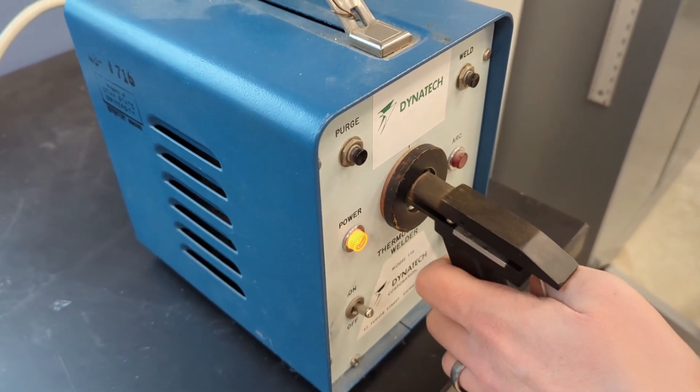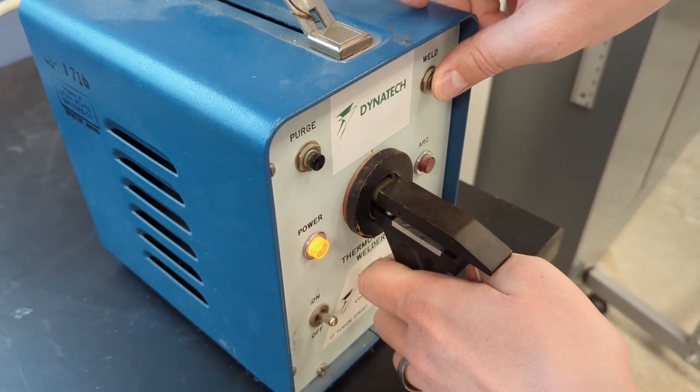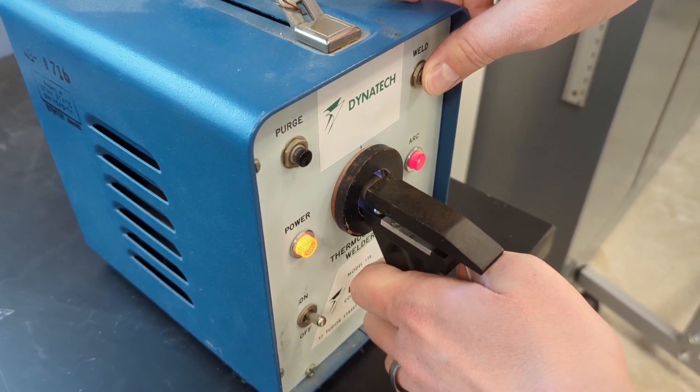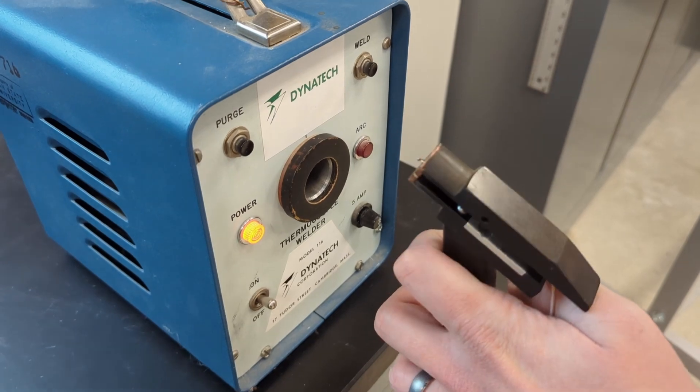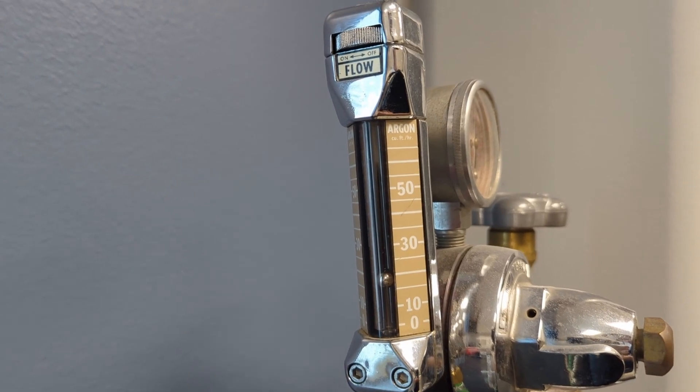Place the wire holder with twisted thermocouple wire into the welder. Press and hold the weld button until the arc button lights up and a weld flash is seen. The thermocouple welder will automatically flush the weld area with argon during the weld.